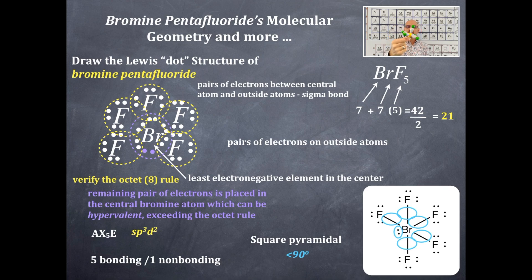It is square pyramidal. That's a square, then the pyramid shape. Its bond angles are less than 90 because this lone pair I'm holding is compressing these bond angles.